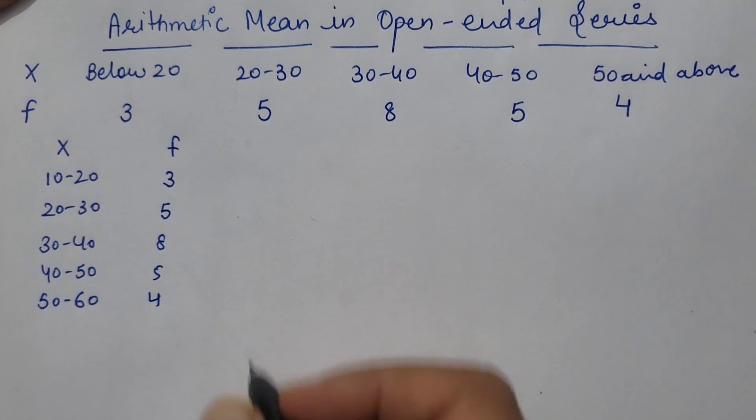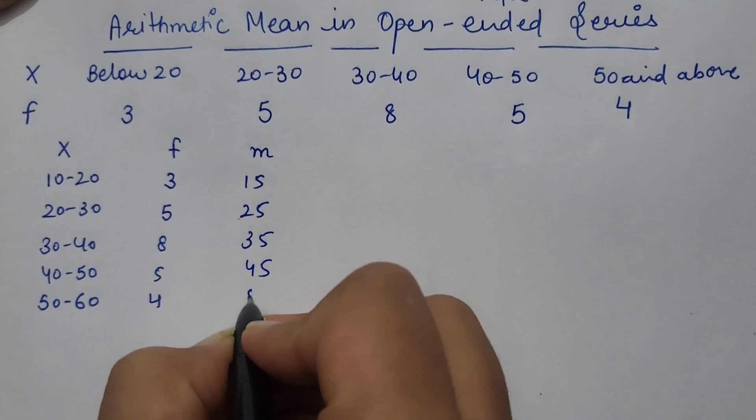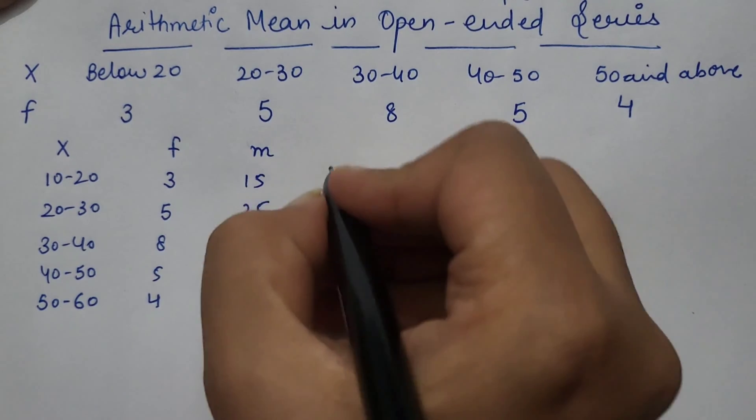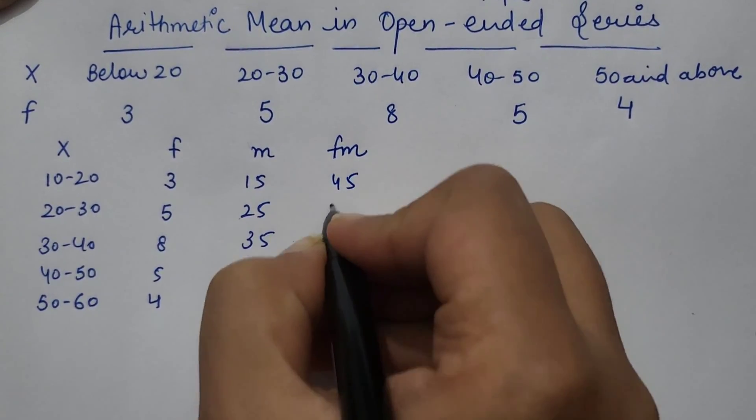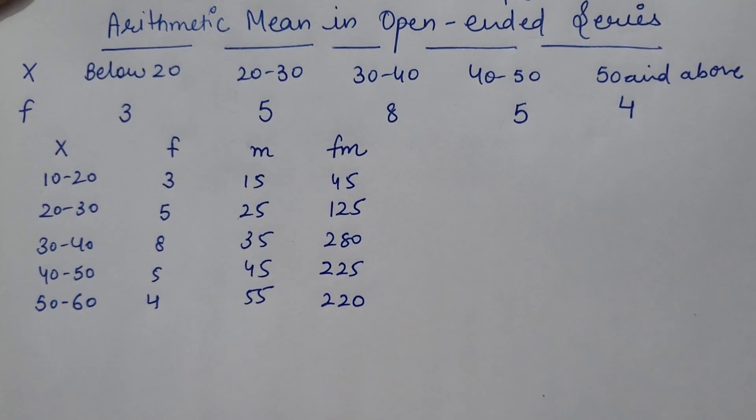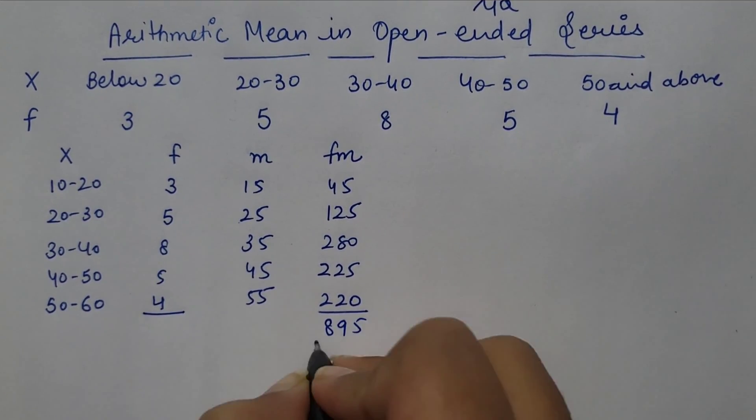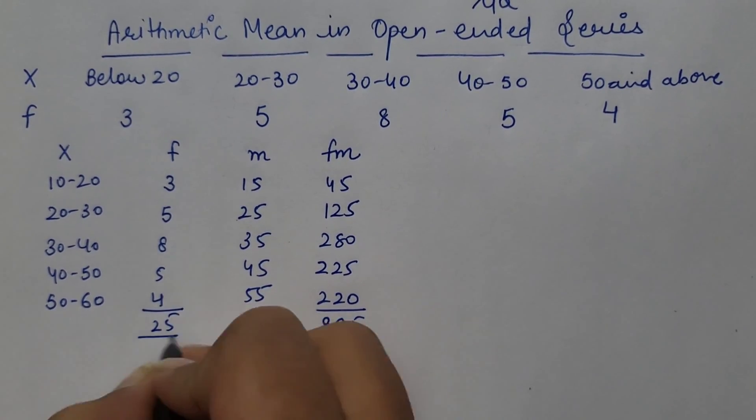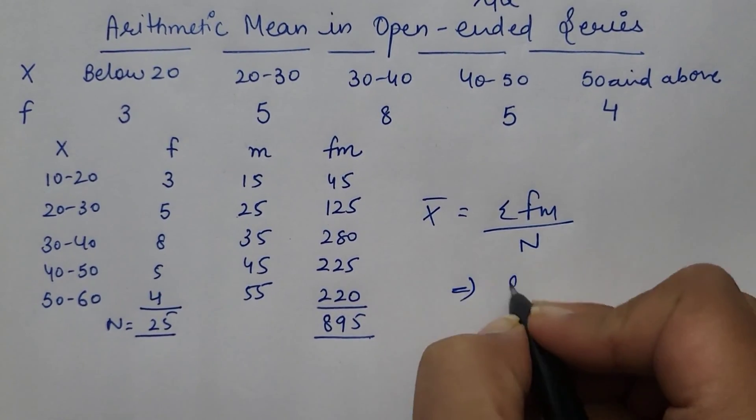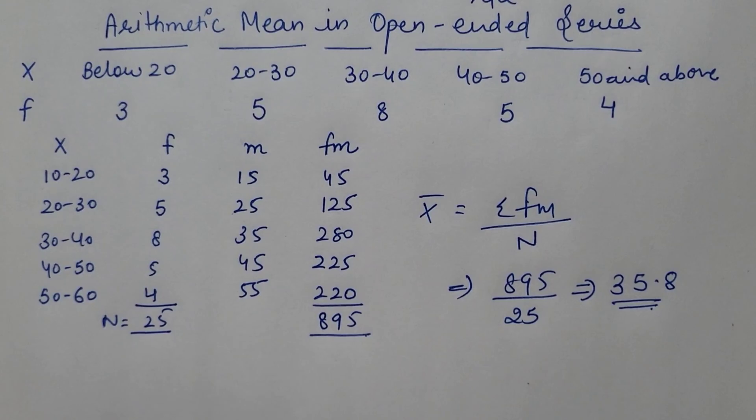Now this question is very simple. Here we can take mid-values like 15, 25, 35, 45, and 55. By applying any of the three methods we can obtain mean here. I am solving this question with direct method. So mean can be calculated by adding this column and frequency and applying it into formula. So mean here would be 35 point.